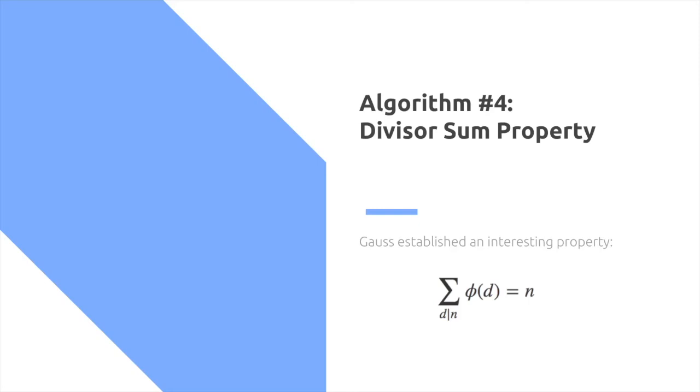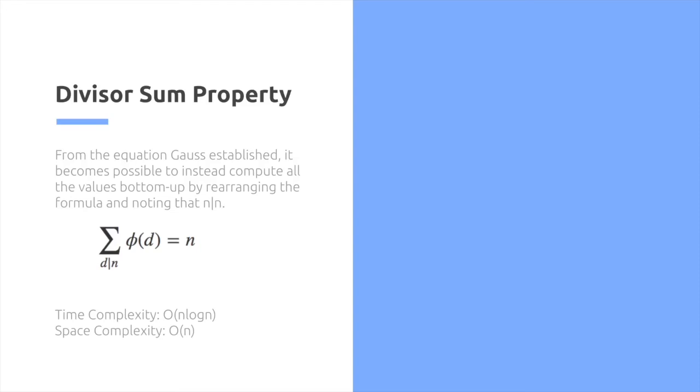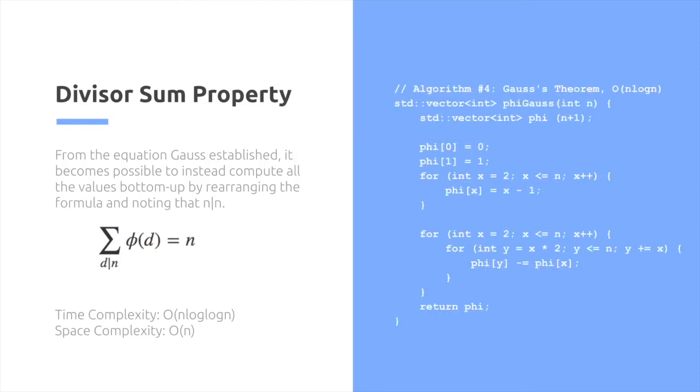And the last approach is the divisor sum property. Gauss established an interesting property that the summation of all the divisors of a specific number, their phi values, add up to n. From the equation Gauss established, it becomes possible to instead compute all the values bottom up, by rearranging the formula and noting that n divides n. This yields a slightly worse time complexity of n log n, but it's slightly more simple to write than the other algorithm I proposed earlier with the sieves.